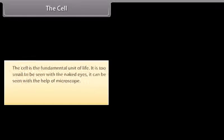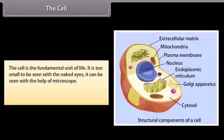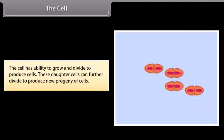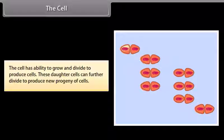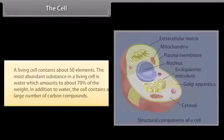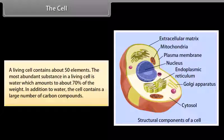The cell is the fundamental unit of life. It is too small to be seen with naked eyes; it can be seen with the help of a microscope. Cells are packets of chemicals essential for life. The cell has the ability to grow and divide to produce cells. These daughter cells can further divide to produce new progeny of cells. Cells may be combined to form tissues, and tissues may be grouped into organs. A living cell contains about 50 elements. The most abundant substance in a living cell is water, which amounts to about 70% of the weight. In addition to water, the cell contains a large number of carbon compounds.